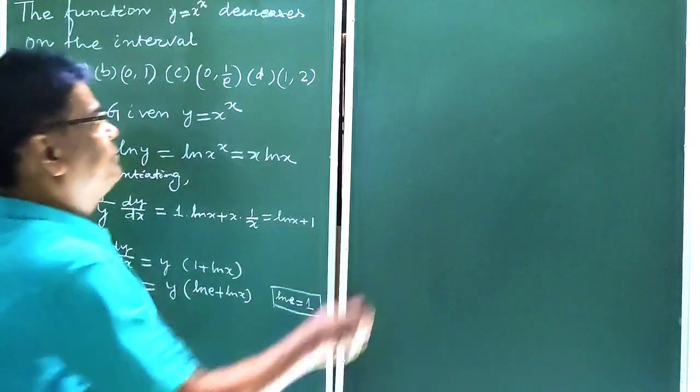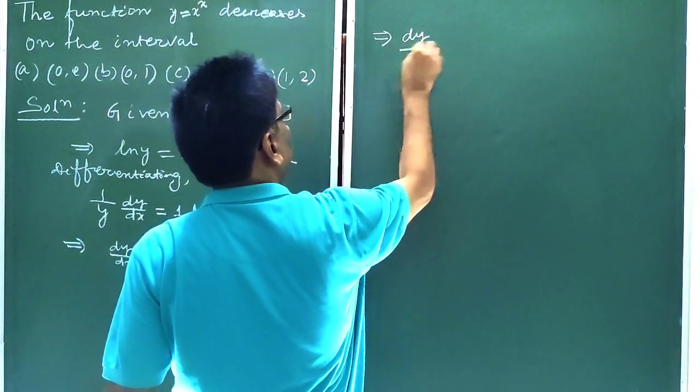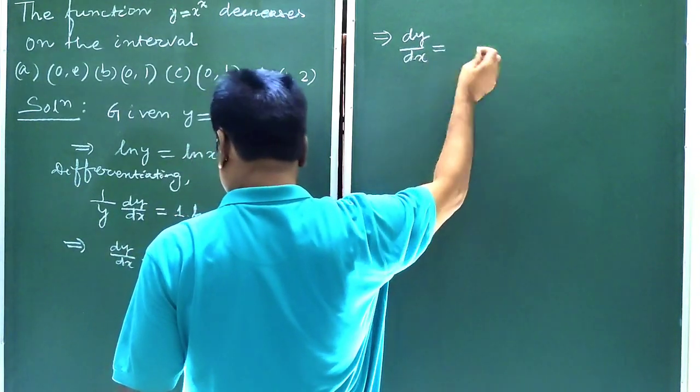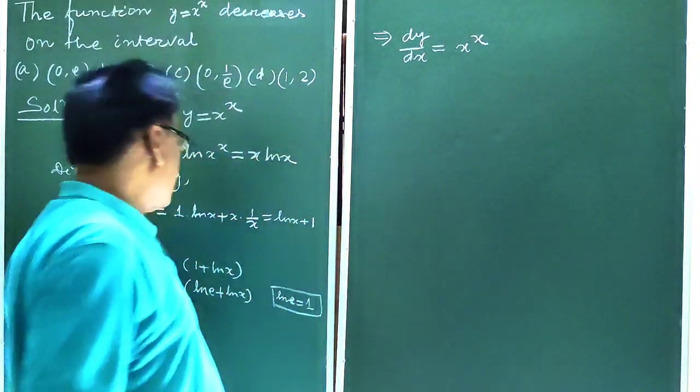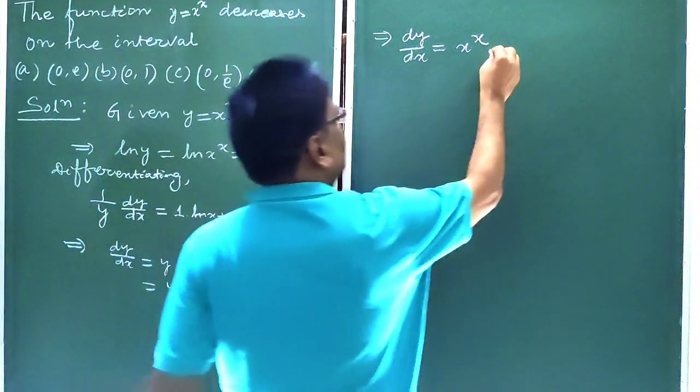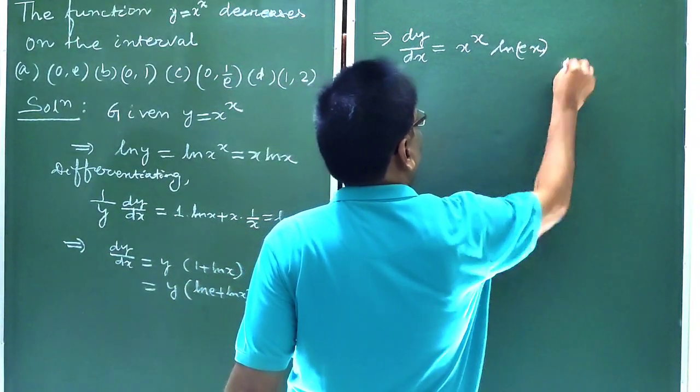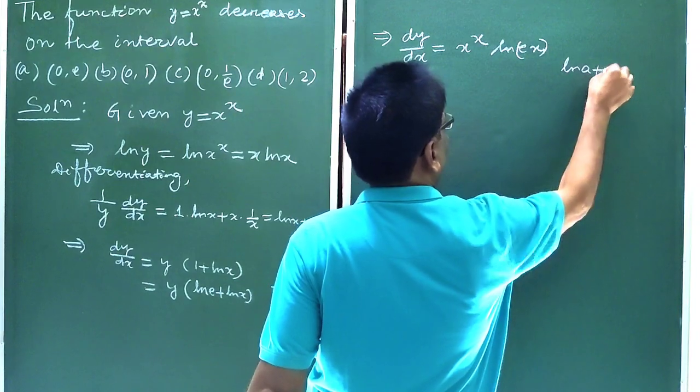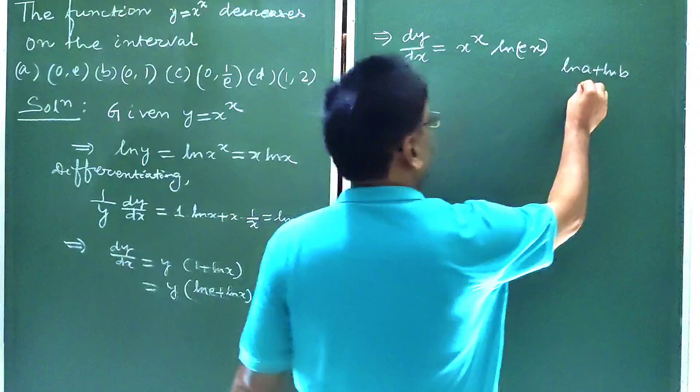This implies dy/dx equals x to the power x times ln(ex), because we know ln a plus ln b equals ln(ab).